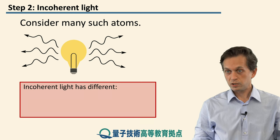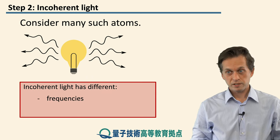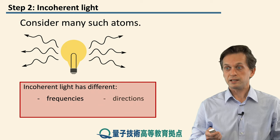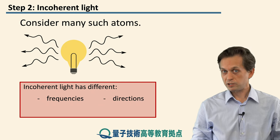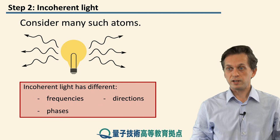So to conclude, incoherent light has different frequencies, it has different directions in which it is traveling, and it is out of phase — so it has different phases.